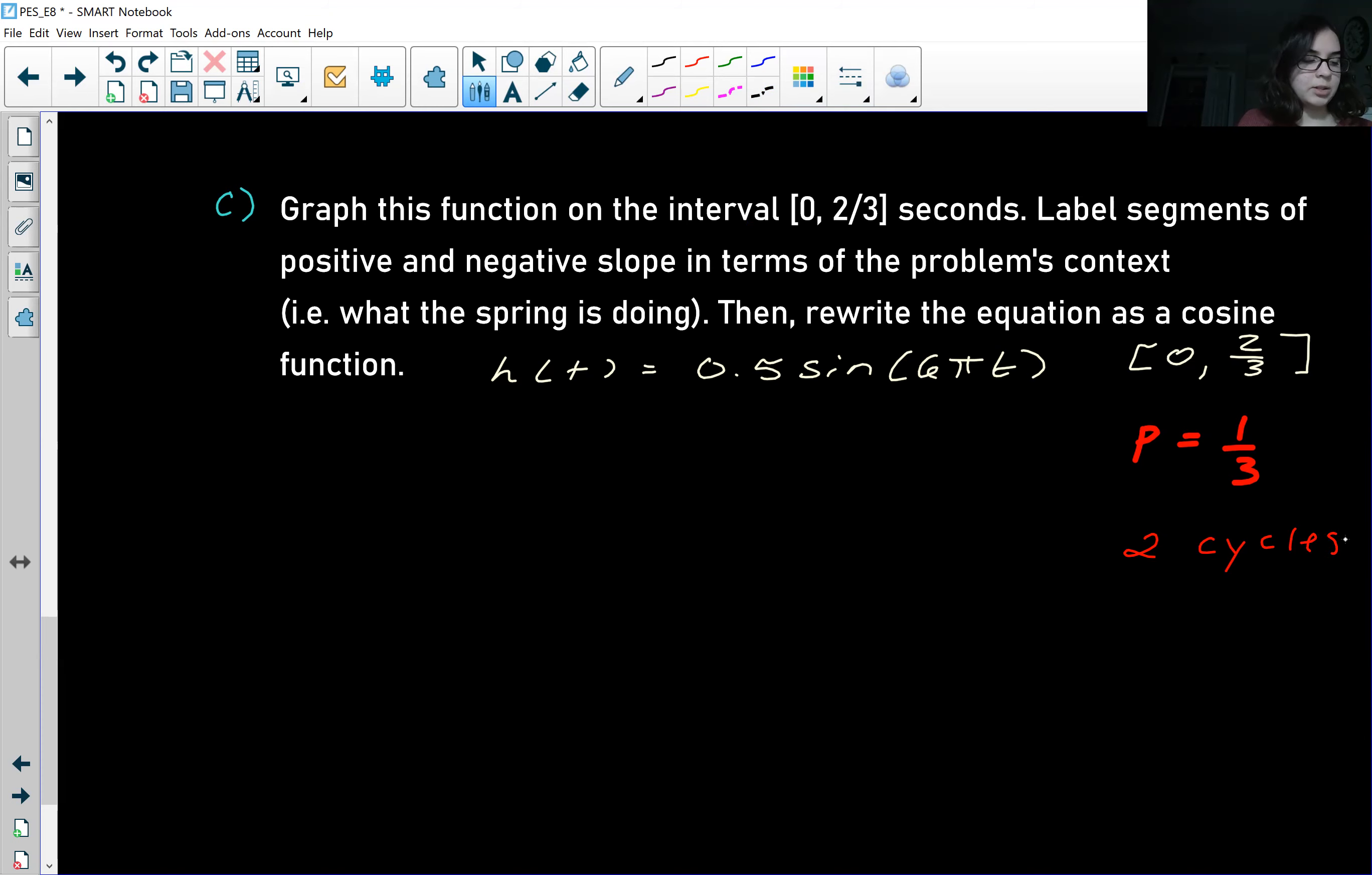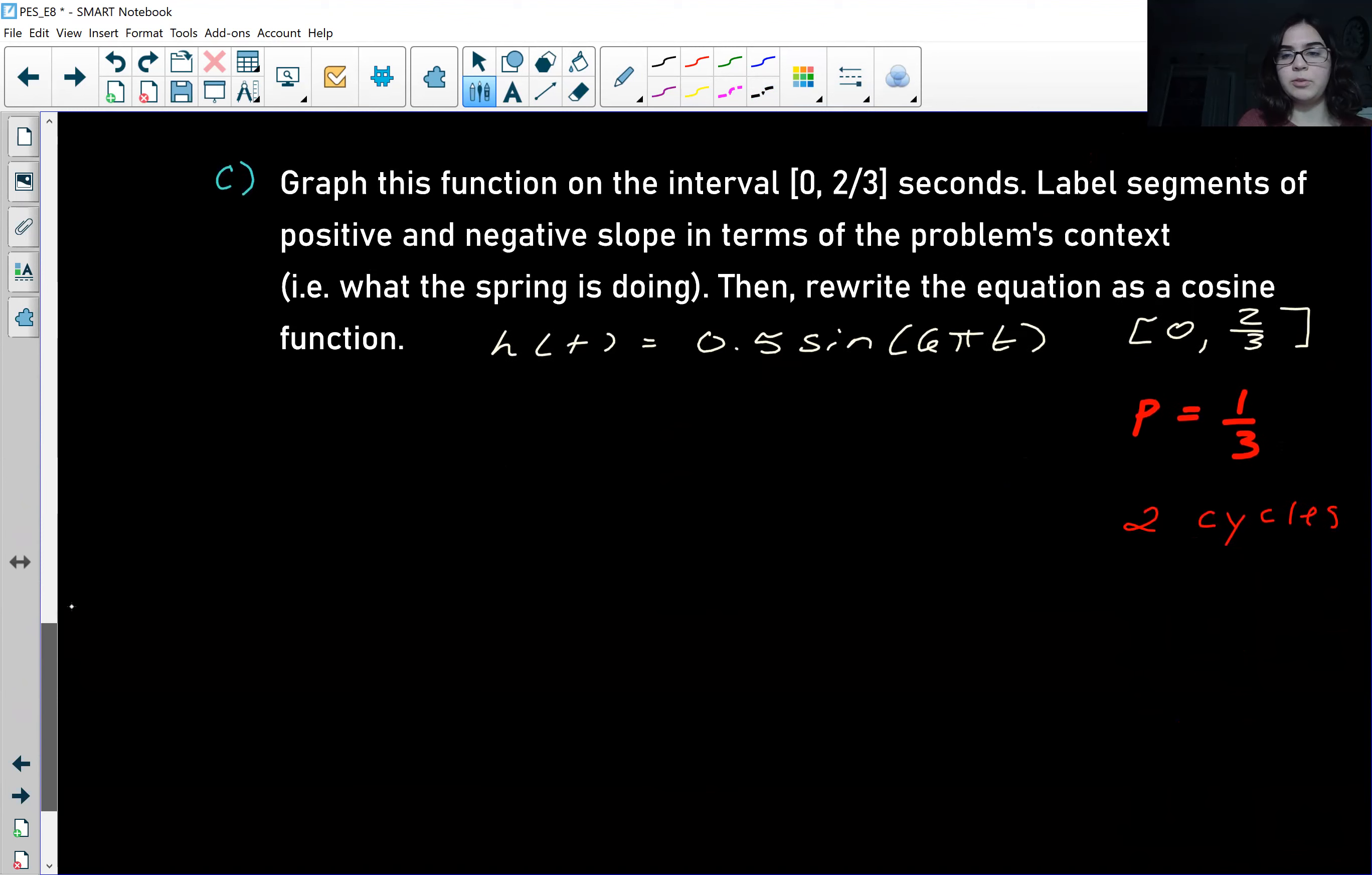Something else that I like to do, typically what I'll do, is I think about the general structure of the graph. So it would be a sine function, and where it equals zero, how many times it equals zero in our time interval. And then I'll divide the time interval by, so two-thirds, I would divide that by how many times the function equals zero. And then, so that's how I scale my x-axis.